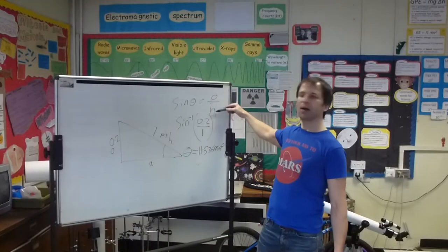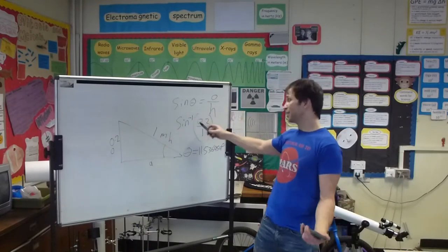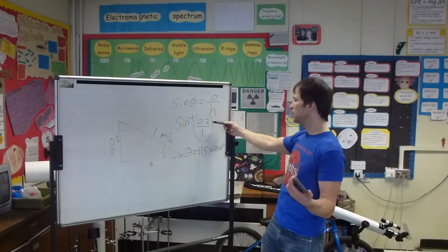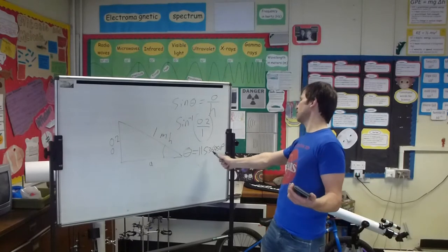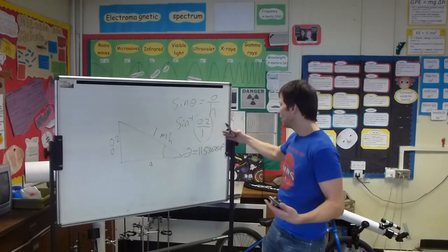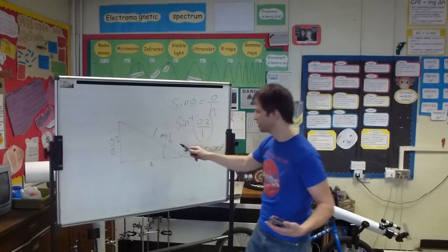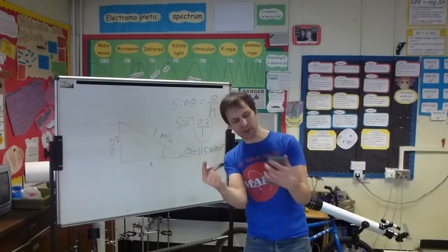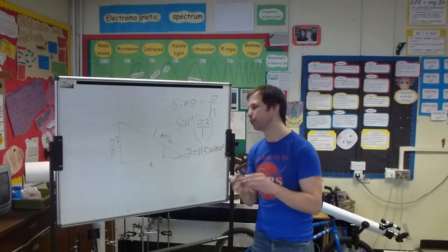Now we've got the hypotenuse and the opposite. Sin of theta equals opposite over hypotenuse, which means that sin to the minus 1 of 0.2 over 1 equals 11.5369. So that is the angle. This is this angle here. Now the thing is, this is where it gets a few people a little bit confused.